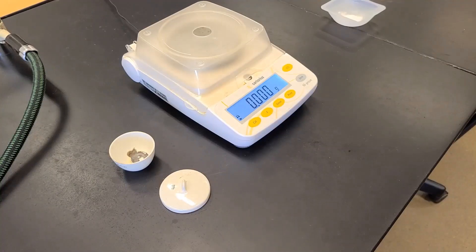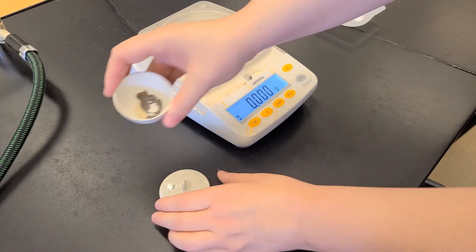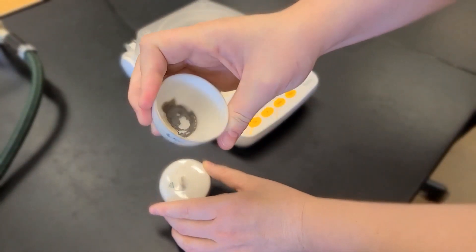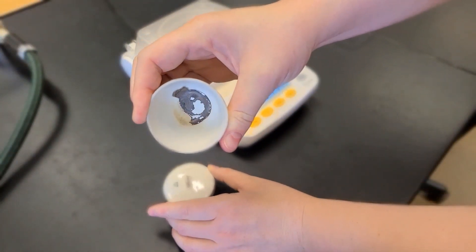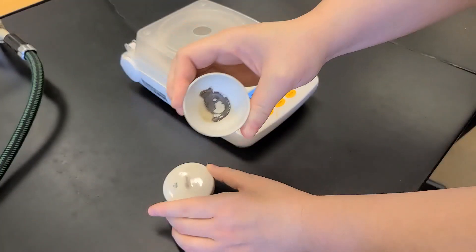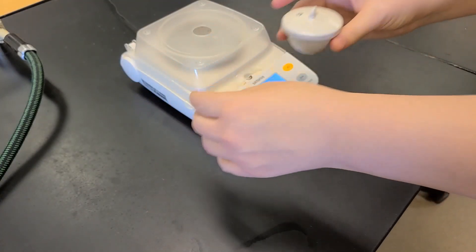First, we will need to determine the mass of the crucible and lid. Inside the crucible, you might see some residue. This is from previous experiments, and it is bonded to the porcelain inside the crucible, so it will have no effect on our results.